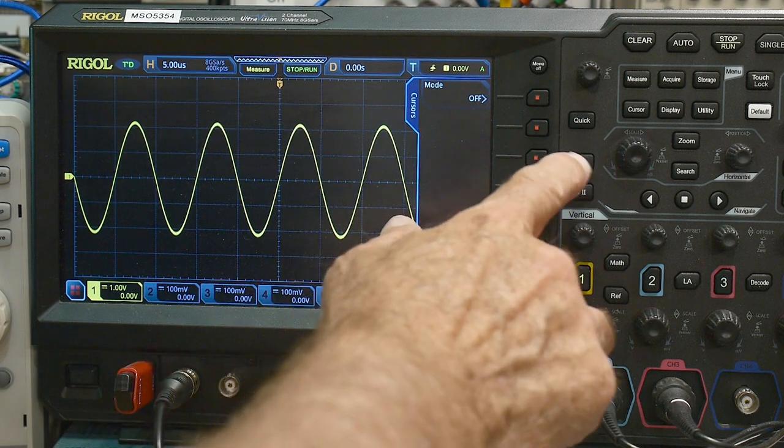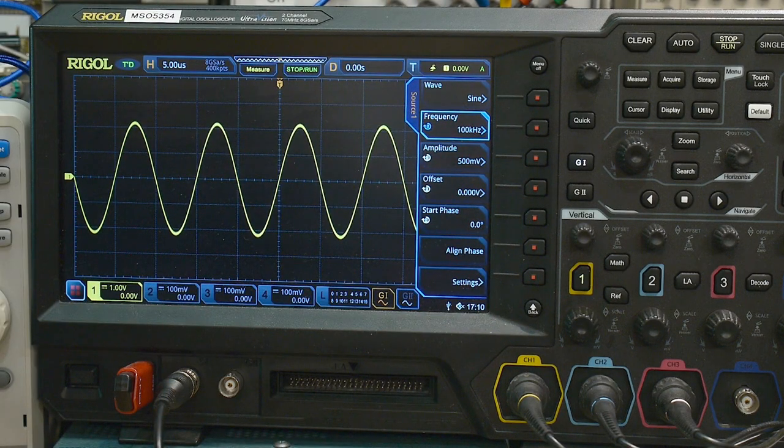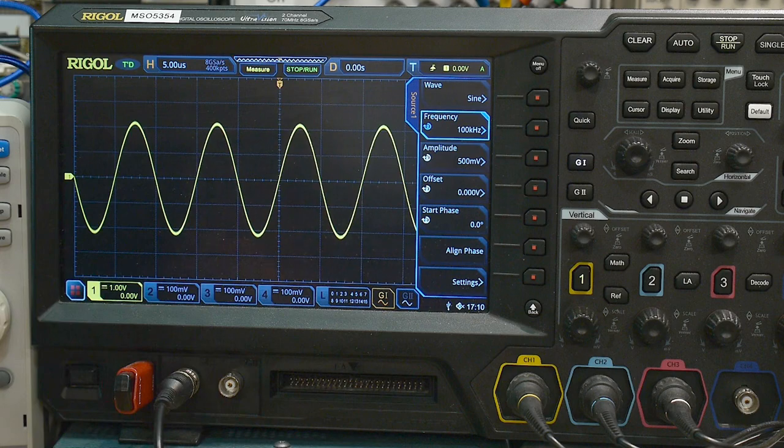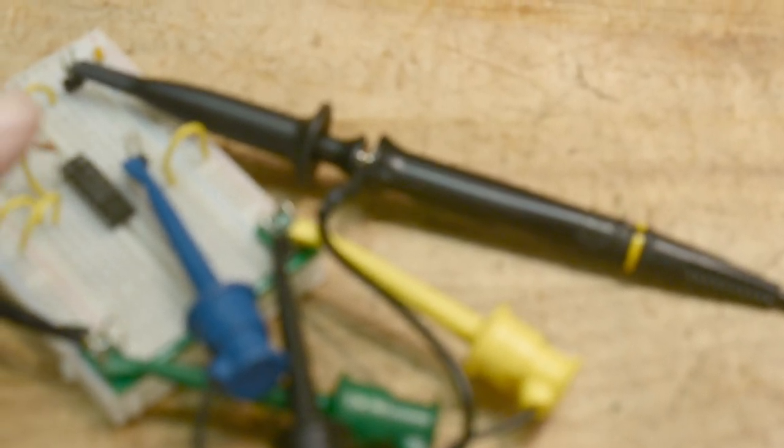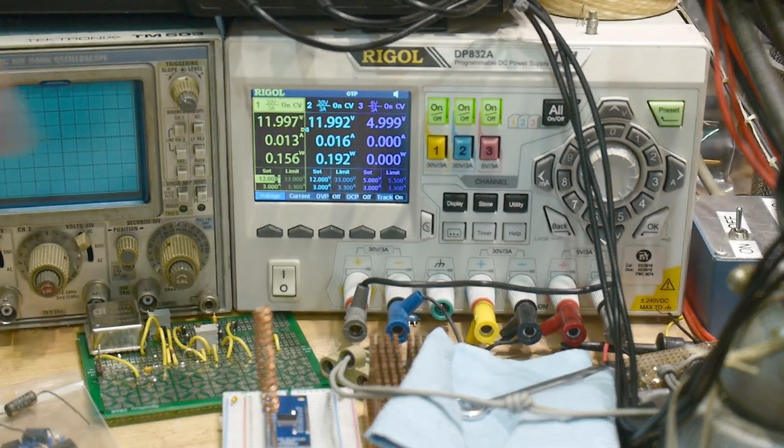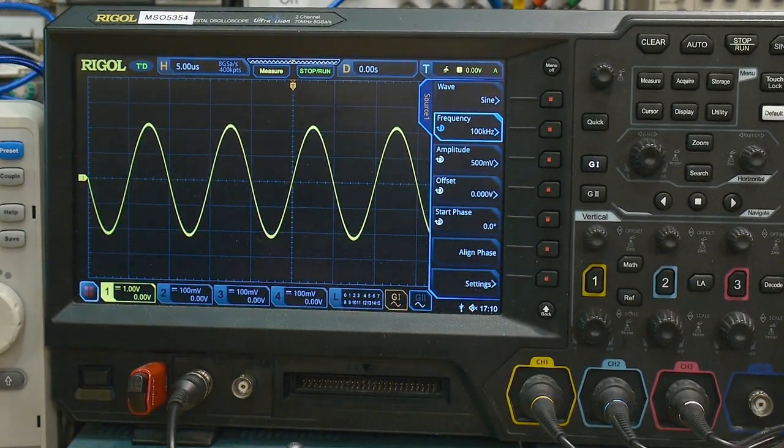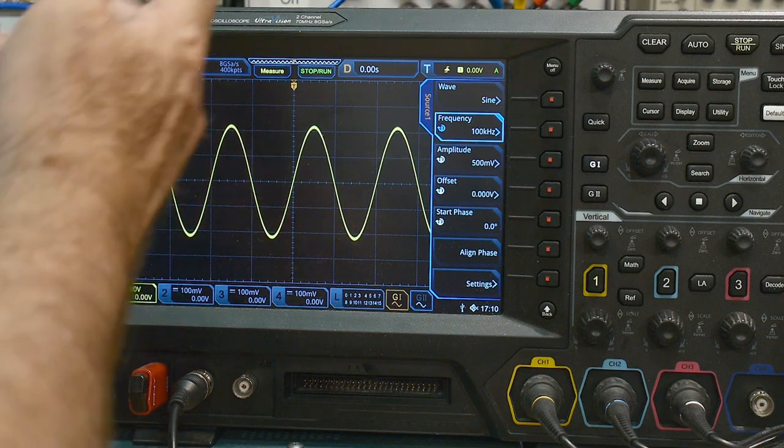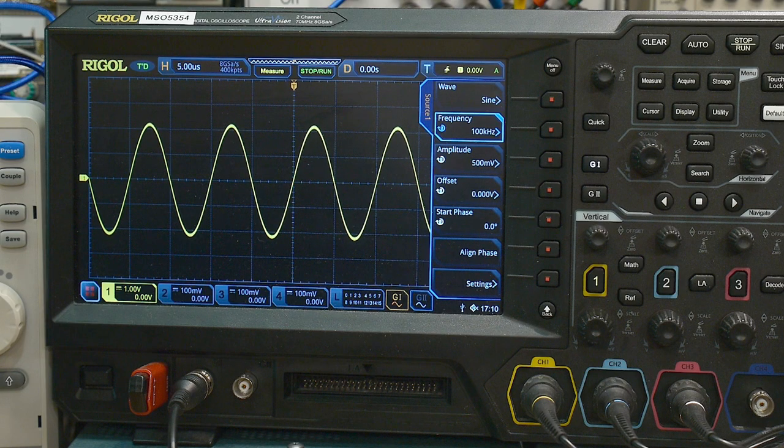So here's the generator. We're inputting 100 kilohertz sine wave, half of a volt amplitude. We are running the part on plus or minus, right there, focus, plus minus 12 volts. So we've got plus minus 12 volts going in, and this is what we got coming out. So we're at one volt per division, there's one, two, a little bit bigger than two, plus or minus two volts.